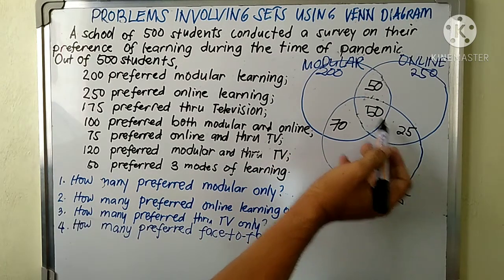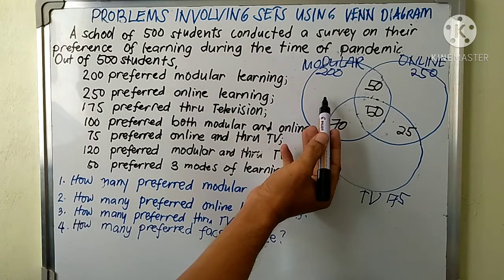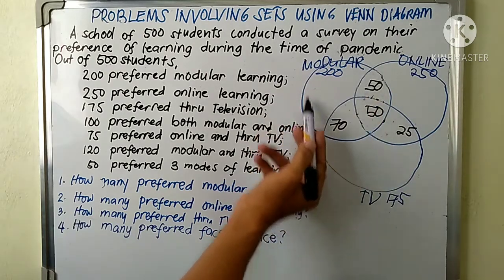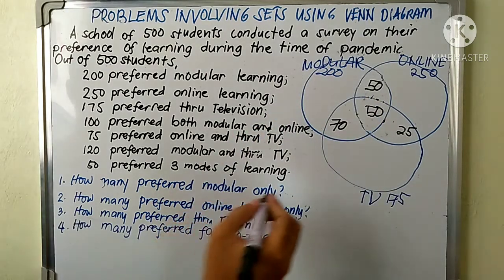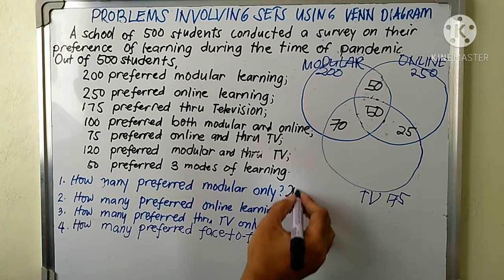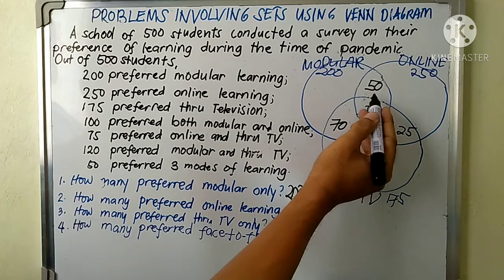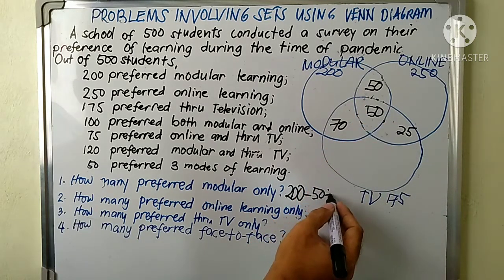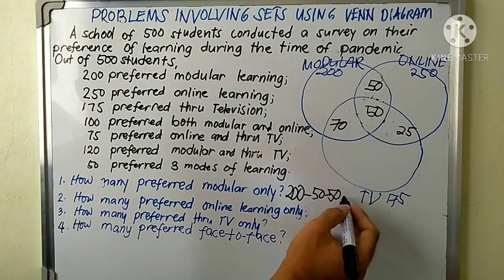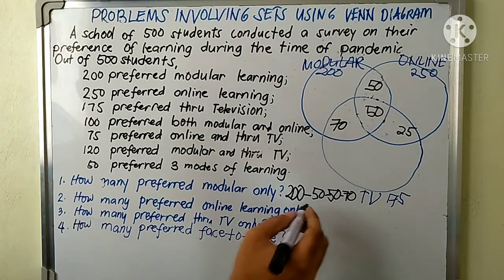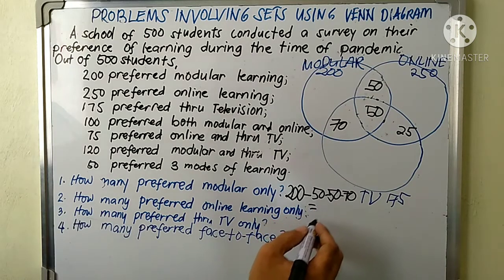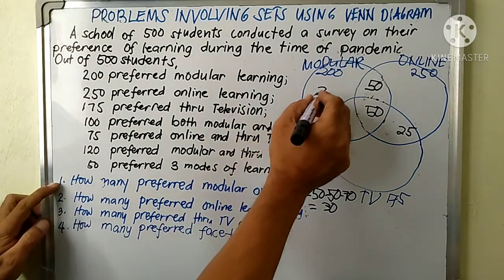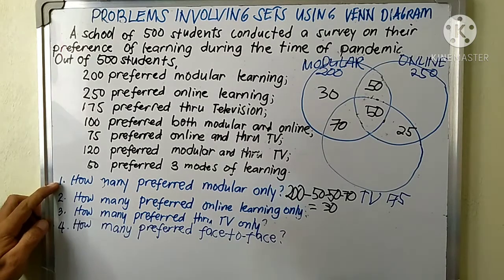We can now find how many students preferred modular only. That portion of the modular circle is calculated as: 200 minus 50 minus 50 minus 50 minus 70, and the answer is 30. So 30 students preferred modular learning only.